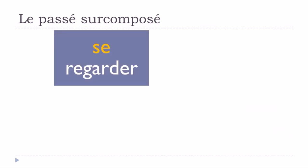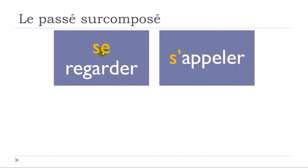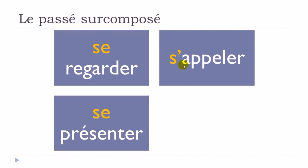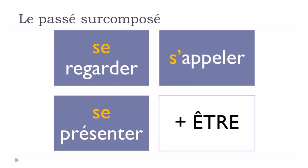Also remember that les verbes pronominaux — verbs constructed with se in front of them, like se regarder or s'appeler — will also require être for the passé surcomposé form.